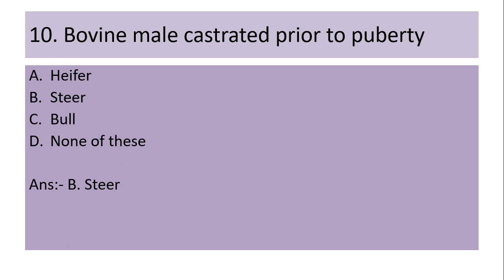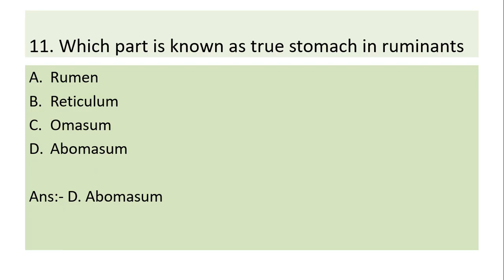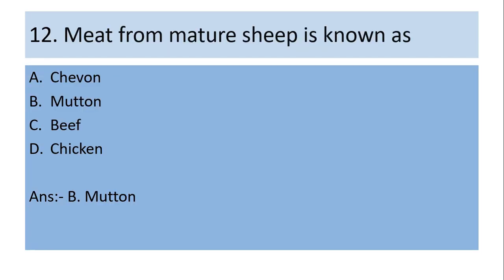Tenth question: A bovine male castrated prior to puberty is known as — (a) heifer, (b) steer, (c) bull, (d) none of these. Answer is (b) steer. Eleventh question: Which part is known as the true stomach in ruminants — (a) rumen, (b) reticulum, (c) omasum, (d) abomasum. Answer is (d) abomasum.